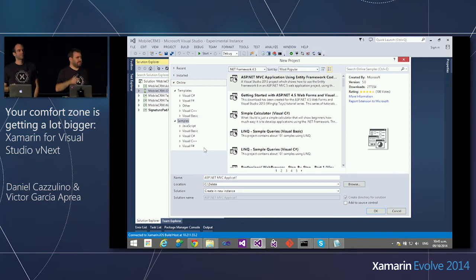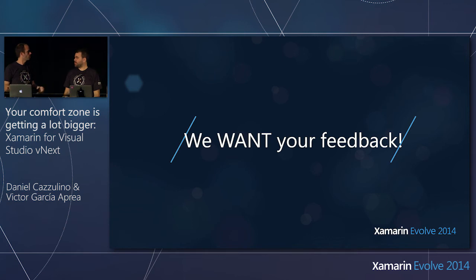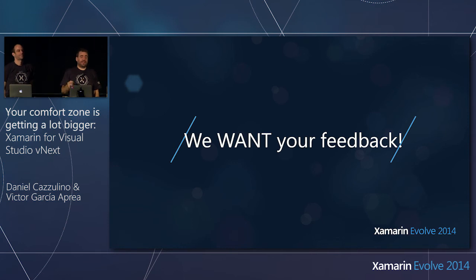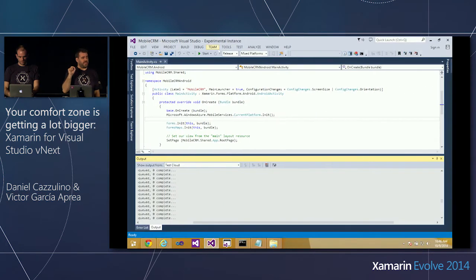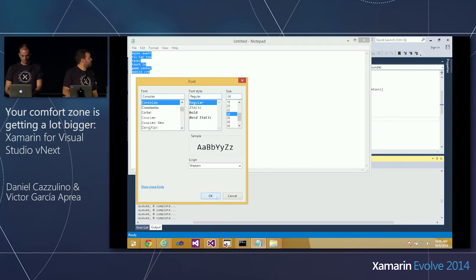Audience question about Mac build host connection stability and multiple machines: The multiple machine issue is kind of inevitable because Apple imposes that you can only have one machine connected simultaneously. We did add a feature to explicitly disconnect from the build host, so you can have multiple Visual Studio instances and switch back and forth — refresh the connection on one, it connects; disconnect, go to the other. Regarding connection stability — that's high on our list. We have to balance the underlying things you don't see with the new features you want.